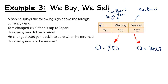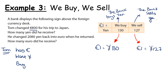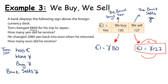If Tom has euro and wants yen, he's going to buy yen, which means the bank sells yen. So when converting 800 euro to yen, we use the We Sell exchange rate of 127. Going from euro to yen we multiply, so 800 multiplied by 127 gives us 101,600 yen. That's how many yen he received.